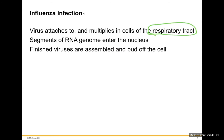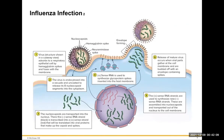For influenza infection, the virus attaches to and multiplies in cells of the respiratory tract, spread by droplets just like coronaviruses. Segments of the RNA genome enter the nucleus; finished viruses are assembled and bud off cells. The virus absorbs to the respiratory lining — the epithelial cells — by hemagglutinin spikes. Those spikes allow it to stick to and hold on to the epithelial surface of the respiratory lining, and then it fuses with the membrane. The virus is then endocytosed into a vacuole.